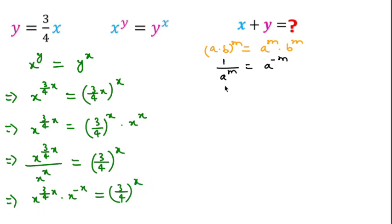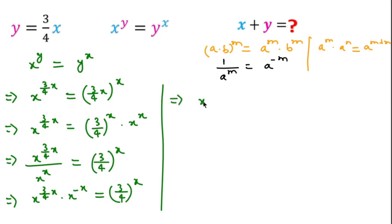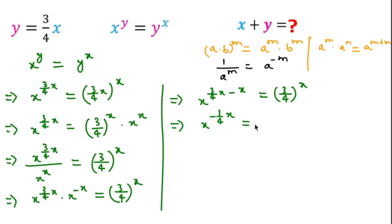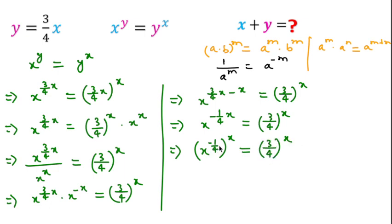Since the bases are the same, using the exponent rule that a to the power m times a to the power n equals a to the power m plus n, I can write x to the power 3 over 4x plus minus x, which simplifies to x to the power minus 1 over 4x, equal to 3 over 4 to the power x. This can also be written as x to the power minus 1 over 4 to the power x equals 3 over 4 to the power x, using the exponent rule.